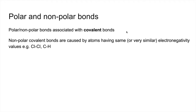Non-polar covalent bonds are caused by atoms having the same or very similar electronegativity values. For example, the Cl-Cl covalent bond — they've got the same electronegativity values, so that bond is non-polar. C-H has slightly different electronegativity values, but they are so close that that bond is also classed as being non-polar.